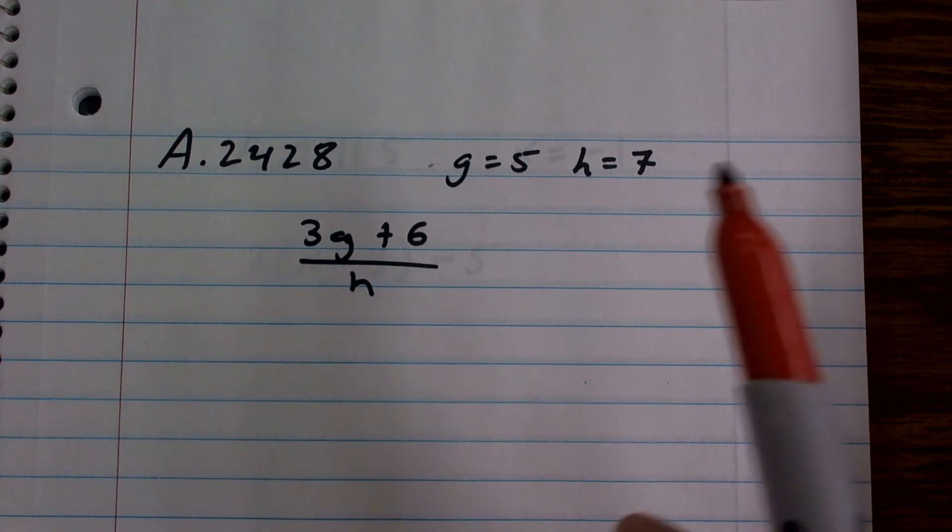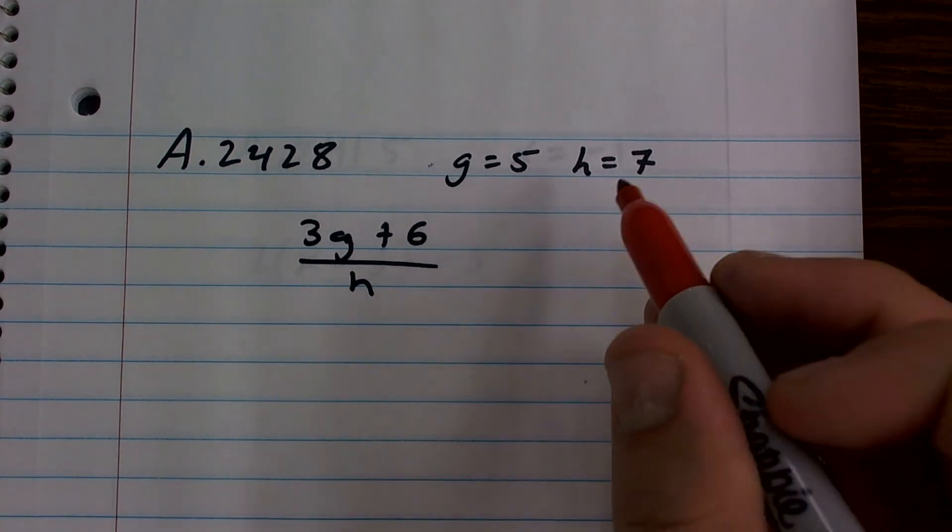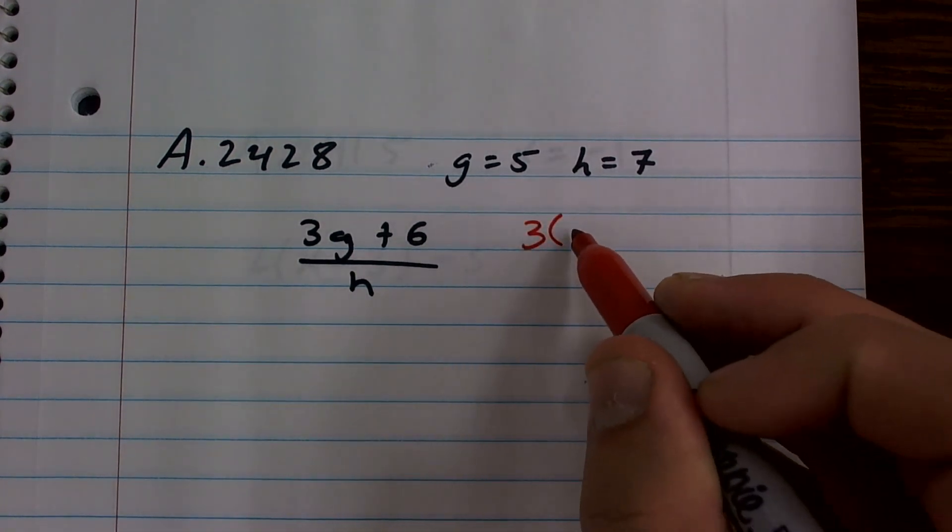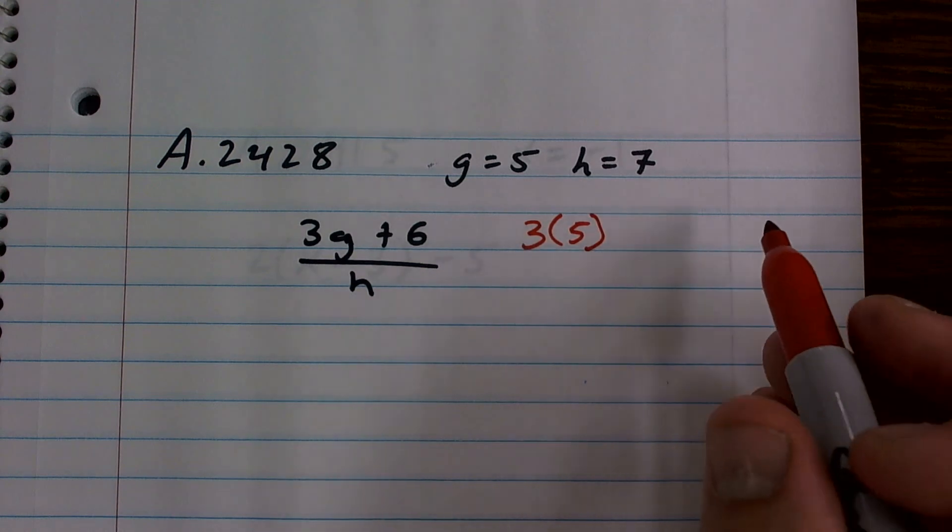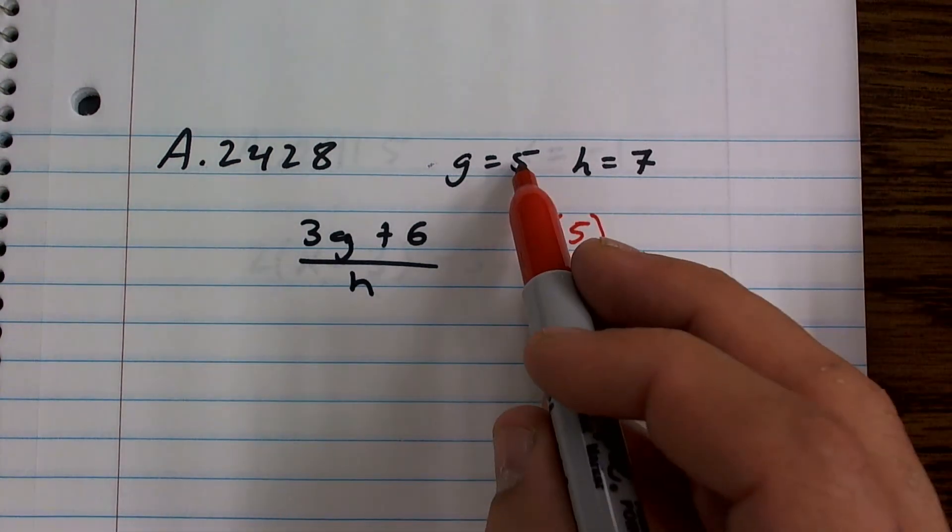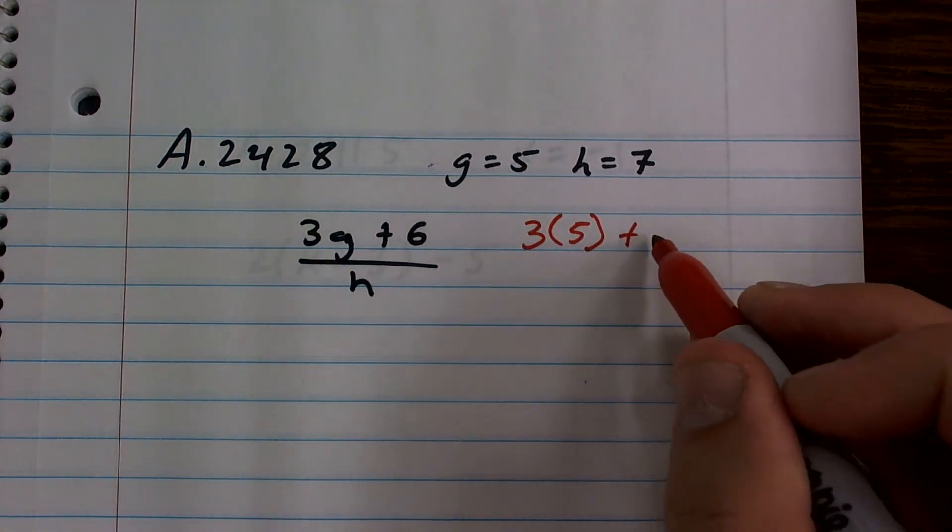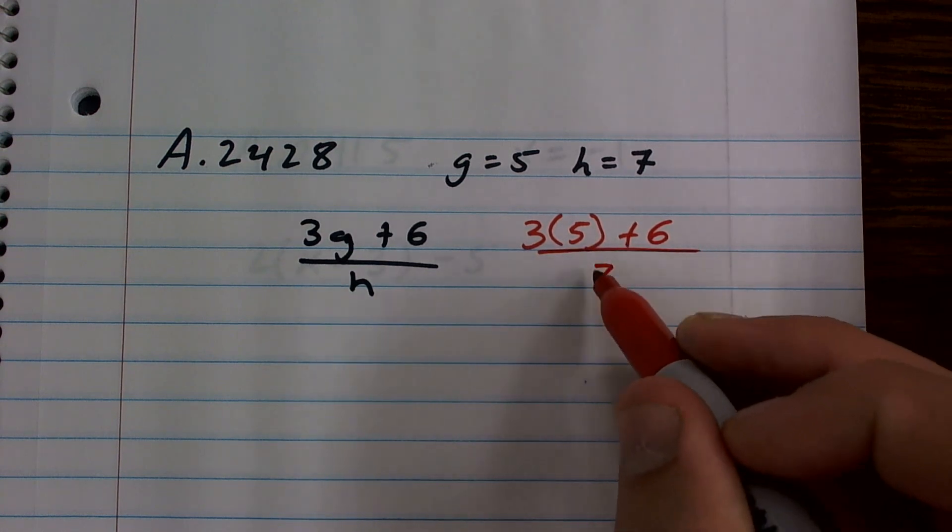g equals 5 and h is equal to 7. So what I'll do is I'll do 3, keep my parentheses around the 5, because I'm evaluating 5 in for g, plus 6 over 7.